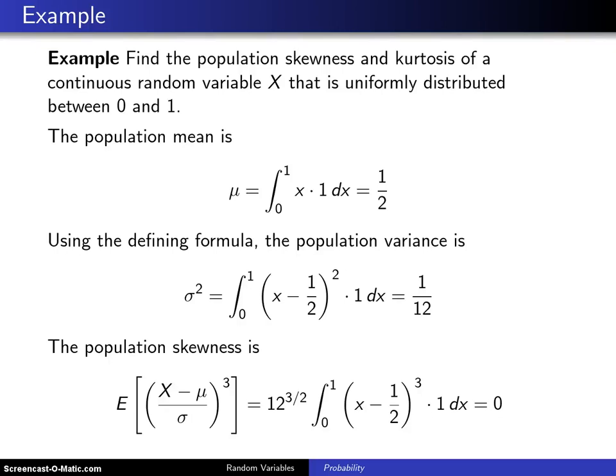This is an example of calculating the population skewness and population kurtosis. Find the population skewness and kurtosis of a continuous random variable X that is uniformly distributed between 0 and 1.